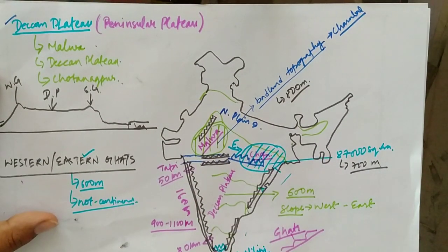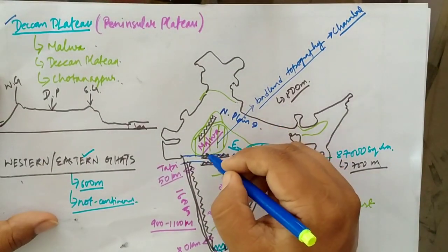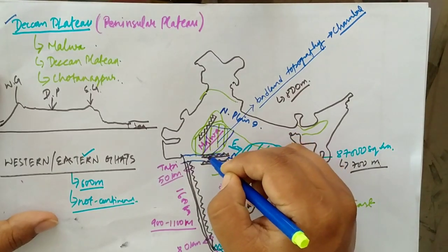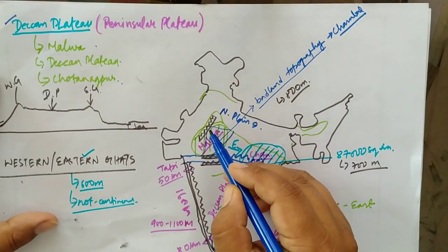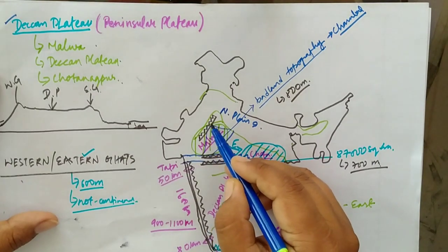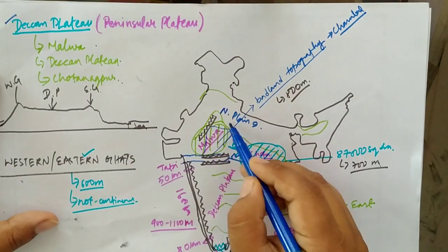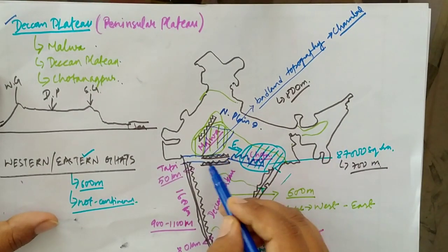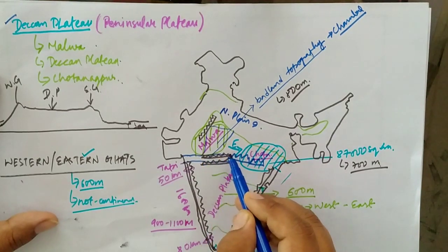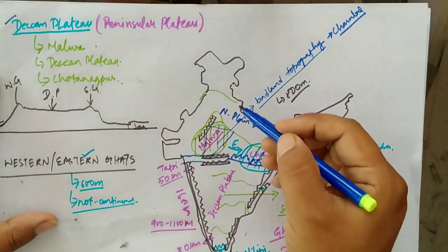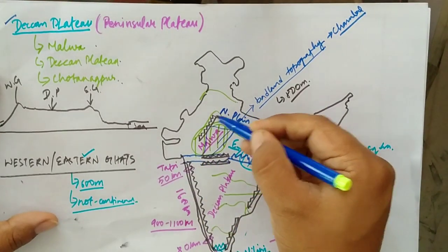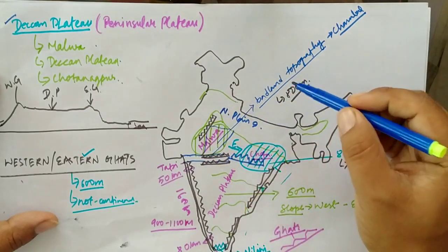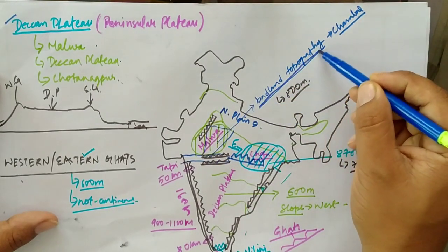Towards the northern half lies the Malwa and Chotanakpur Plateau, and towards the south lies the Deccan Plateau. First we will discuss the Malwa Plateau. It is a triangular-shaped plateau bounded by the Aravalli towards the northwest, Northern Plains towards the north, and the Vindhyan mountain range towards the south.